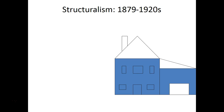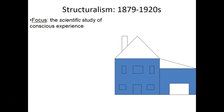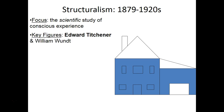Structuralism runs from when Wundt had his lab in 1879 until about the 1920s. The key focus of structuralism as a scientific school of thought was the scientific study of conscious experience of our mind. The key figures for structuralism are obviously Wilhelm Wundt, the father of psychology, but you also need to remember Edward Titchener, who was actually a grad student of Wundt and did way more experimentation after Wundt. Really, structuralism should be founded on Titchener, but Titchener wouldn't have gotten there without Wundt's influence.